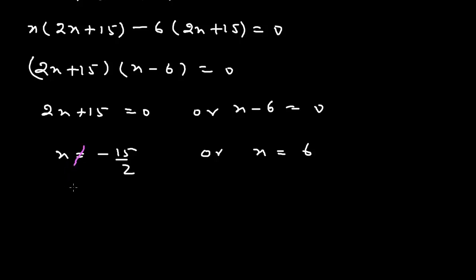But number of articles cannot be negative. Therefore x is not equals to minus 15 over 2. This means x is equals to 6.